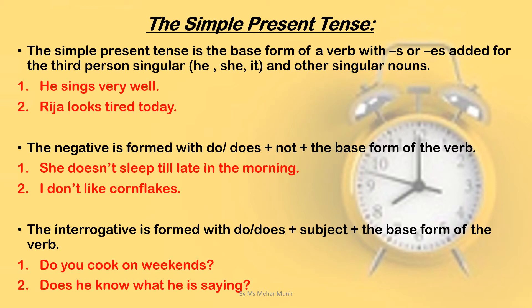How is the negative form created? The negative is formed with do or does, plus not, plus the base form of the verb. For example: She doesn't sleep till late in the morning. I don't like conflicts. We add 'does' according to the subject, and when it is a negative form, we add 'not' plus the base form of the verb. For 'I', which is a plural subject, we add 'do' — the plural form: I do not like conflicts.